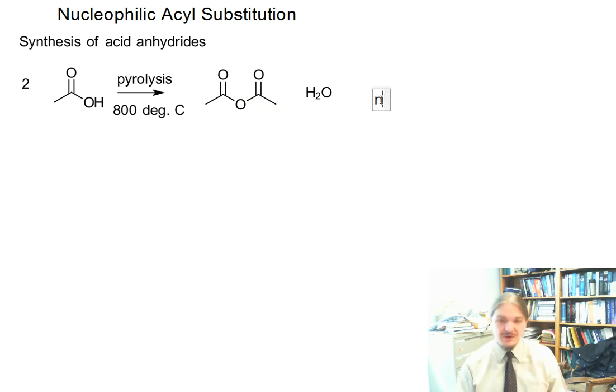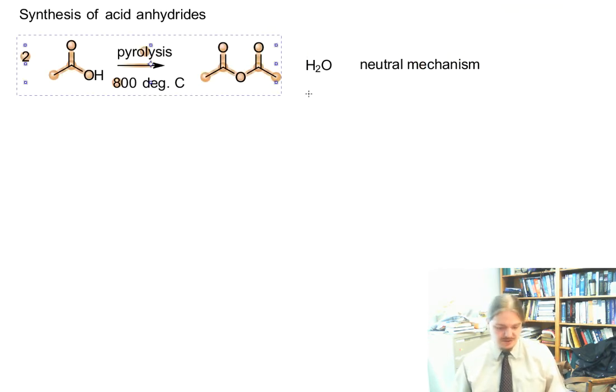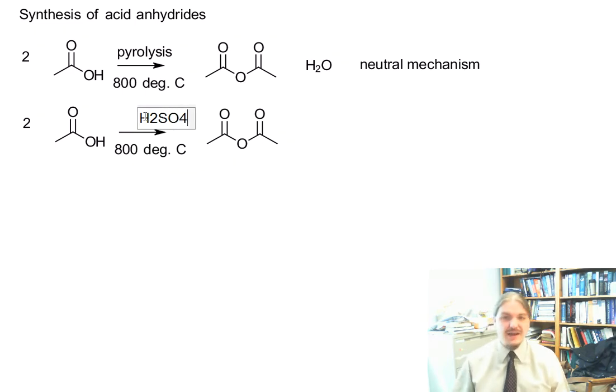This reaction would follow the neutral pathway because there's no added acid or base. Another variation is to use something that is a dehydrating agent, and we're just careful about it. So instead of doing pyrolysis at 800 degrees Celsius, we could do sulfuric acid.